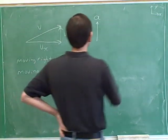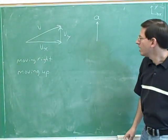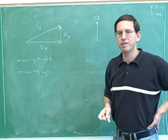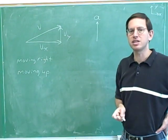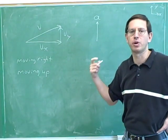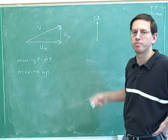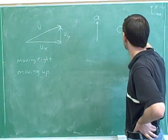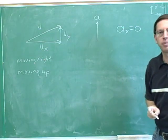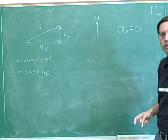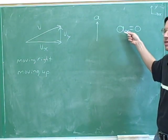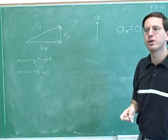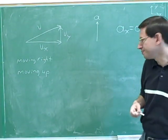Now, how about the acceleration? Notice that the acceleration here is pointing straight up. What that basically means is that it doesn't have a horizontal component. There is no horizontal component to this acceleration, so we can write that the horizontal component of this acceleration is zero. It would be quite useful to actually write this down. If a vector is pointing straight up, then it doesn't have a horizontal component.